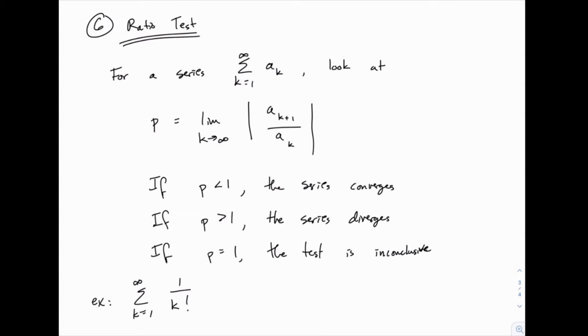For now we're going to start with a series that we're interested in testing convergence for, and we're going to build a ratio, hence the name ratio test. This ratio we're going to call ρ, and it looks complicated at first, but notice what's happening. We're taking the ratio of subsequent terms.